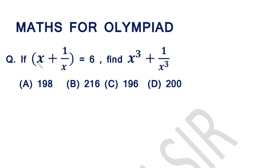If x plus 1 over x equals 6, find x cube plus 1 over x cube. The options are 198, 216, 196, and 200.